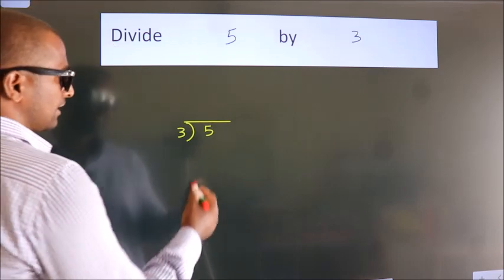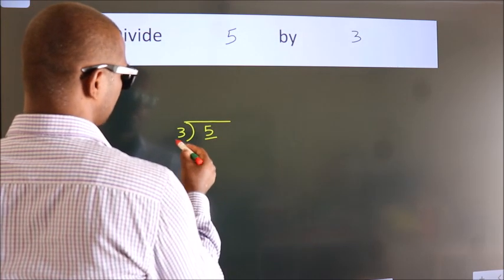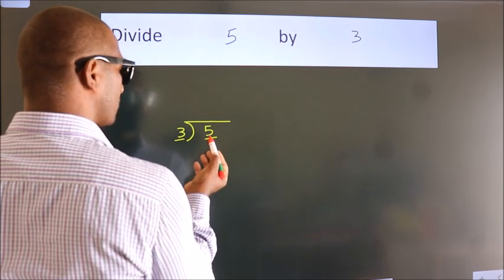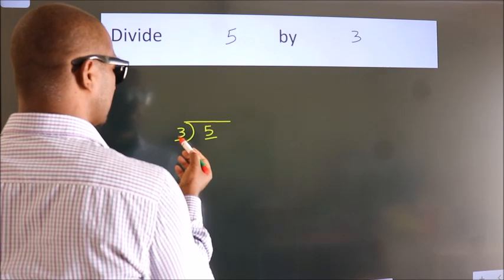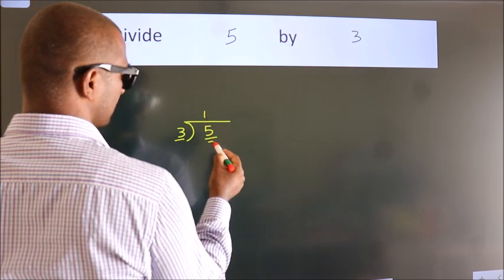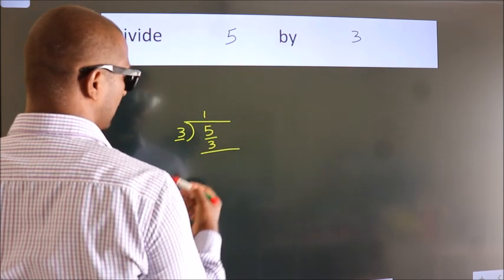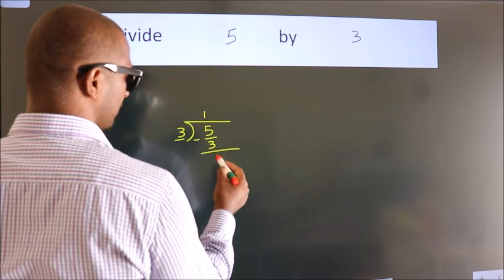Next, here we have 5, here 3. A number close to 5 in the 3 table is 3 times 1 is 3. Now we should subtract. We get 2.